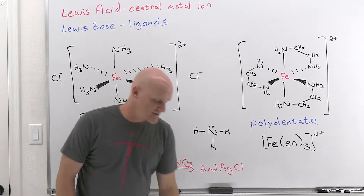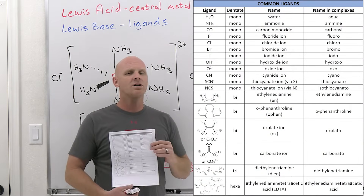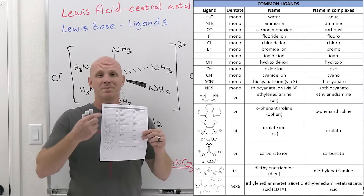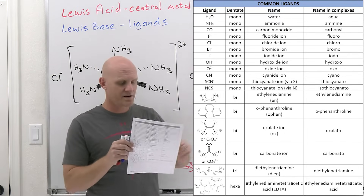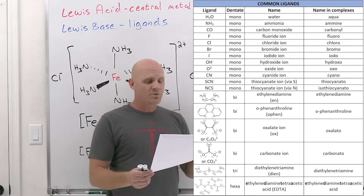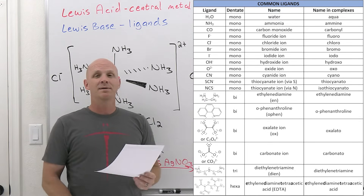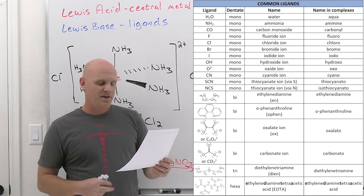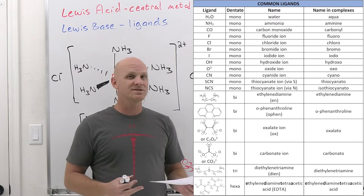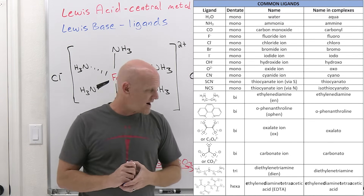You're going to have to memorize which ligands are bidentate — there's only a handful, since most ligands are monodentate. On the next page of the handout, I have a big list. You should know that ethylenediamine is bidentate, as are o-phenanthroline, oxalate, and carbonate. Diethylentriamine is tridentate, and EDTA — ethylenediamine tetraacetic acid — can make up to six bonds to a central metal ion.